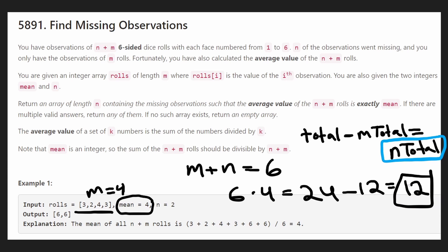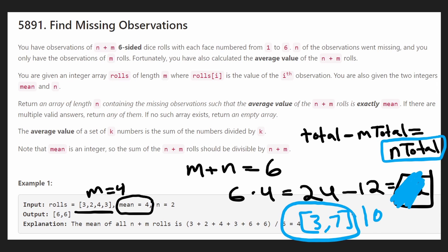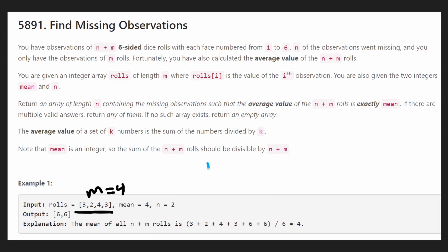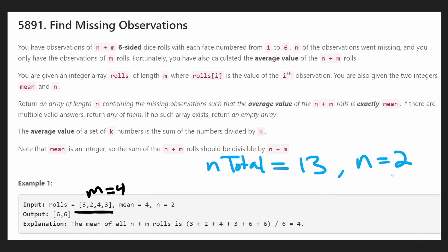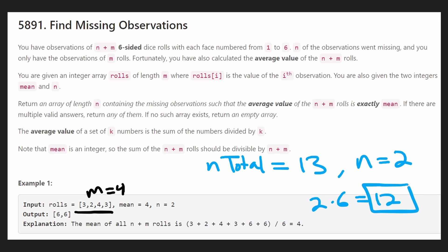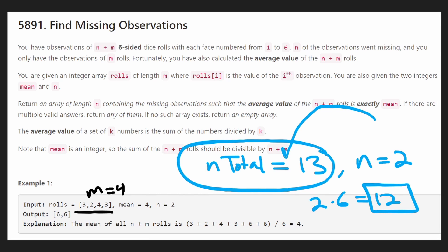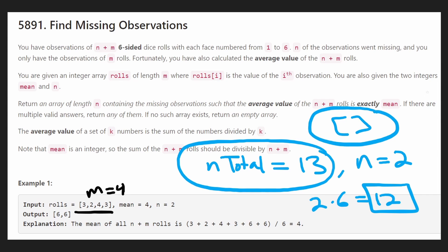But what if the total was actually 10? In that case, there's multiple things — we could have rolled two 5s, a 4 and a 6, and many possibilities. We could return any of them. Now, what if n equals 2 dice and the n total ended up being 13? That's not even possible, because we have 2 dice and the max possible value is 6, so 2 times 6 is 12. That's the max we could have rolled in total. So if we have an n total greater than this number, we have to return an empty list indicating it's impossible to solve this problem.